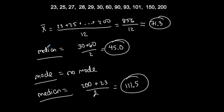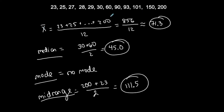Those are the measures of center: mean, median, mode, and mid-range. Mean — take the sum of all values and divide by the total count. Median — order from least to greatest; odd count gives one middle value, even count gives two and you average them. Mode — whatever's repeated most; you might have more than one mode or no mode. Mid-range — take the maximum plus minimum and divide by two.